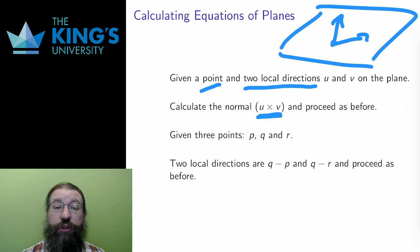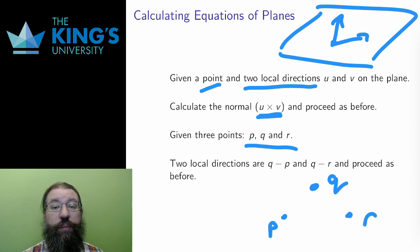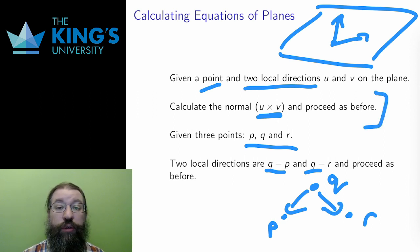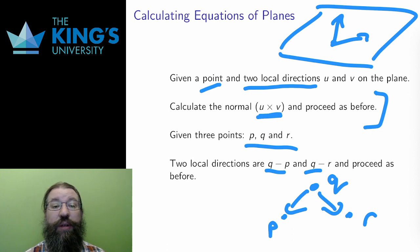Finally, the most common way, perhaps, to describe a plane in R3 is by giving three points. Any three points define a plane, at least as long as the three points aren't all on the same line. Given three points, I can make local directions on the plane by taking differences of the points. Q minus P and Q minus R are local directions on the plane. Then I just repeat what I did before: I have local directions, so I take the cross product to get the normal, and I have a normal and a point — I have three points, even — so I use the method from the previous slides to finish the equation of the plane. And that gives me basically everything I need to know for equations of planes in R3.